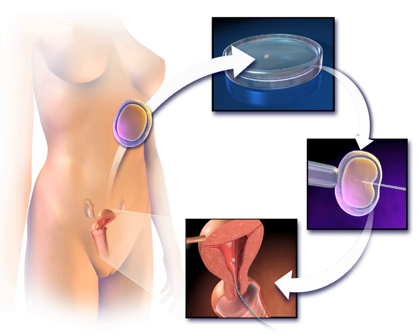In zygote intrafallopian transfer (ZIFT), egg cells are removed from the woman's ovaries and fertilized in the laboratory; the resulting zygote is then placed into the fallopian tube. Cytoplasmic transfer is the technique in which the contents of a fertile egg from a donor are injected into the infertile egg of the patient along with the sperm.